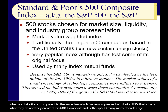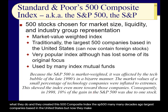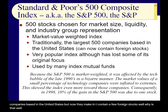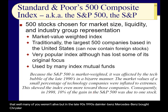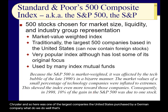They were traditionally the 500 largest companies based in the United States, but now they may contain a few foreign stocks. In the late 1990s, Daimler-Benz — Mercedes-Benz — bought Chrysler. Here was one of the largest US companies purchased by a German company. S&P said, okay, throw Daimler-Chrysler into the S&P 500. So some of the companies became foreign. Then, 10 years later, Mercedes wanted out of the deal — they bought Chrysler for about $36 billion and sold it for $6 or $7 billion.